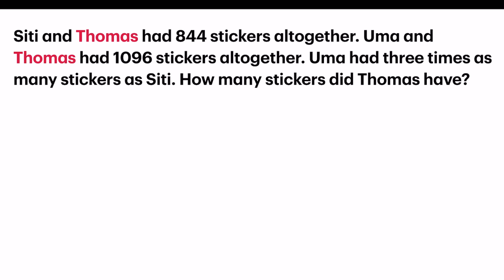Since Thomas is the repeated person, I shall place the number of stamps he had at the front portion. Thomas plus Siti and Thomas plus Uma. The two scenarios given. And this is how my model looks like.